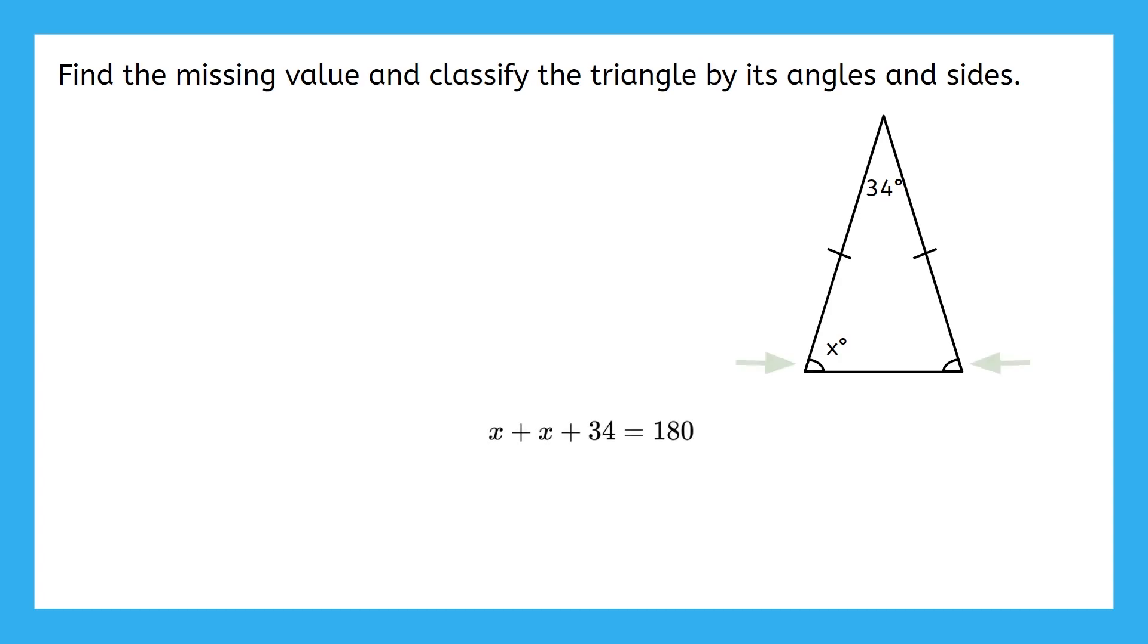We have two angles that are worth x, and the other angle to add to those is 34 degrees. Subtracting 34 from 180 leaves us with 146, and 146 divided by 2 is 73.